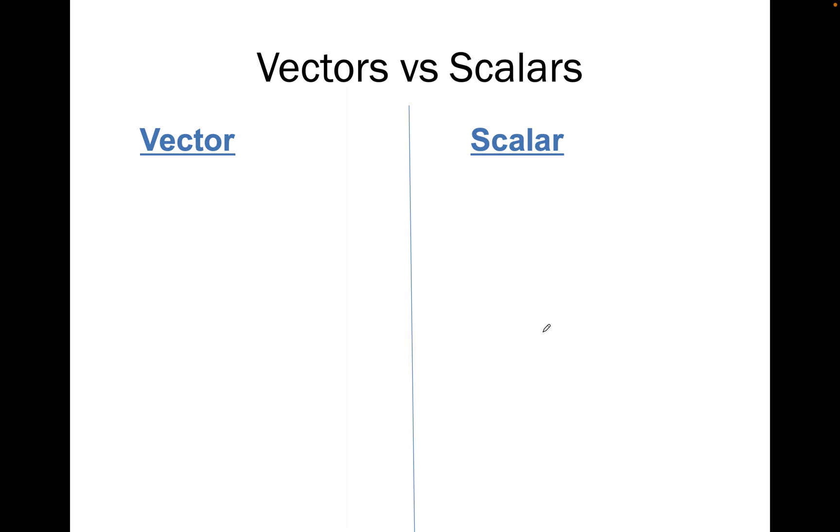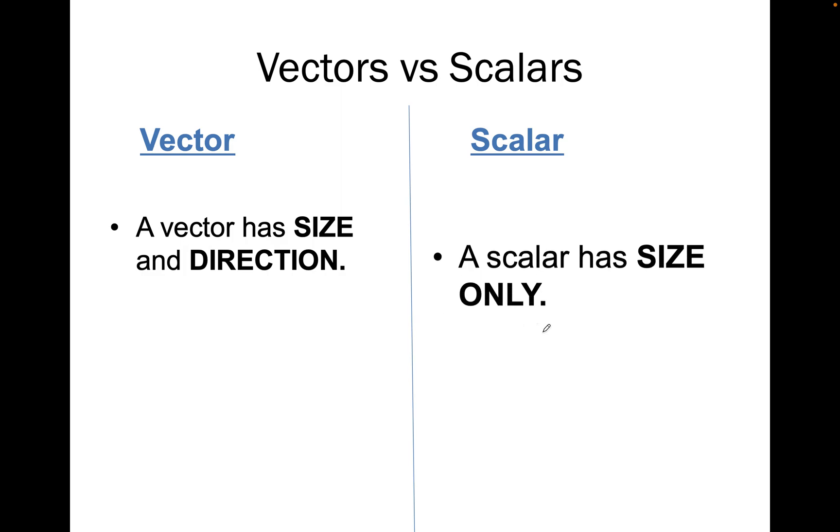So first of all, vectors and scalars. Two different things. A vector is anything that has a size and direction. It has a magnitude and direction. Scalar has size only, magnitude only.